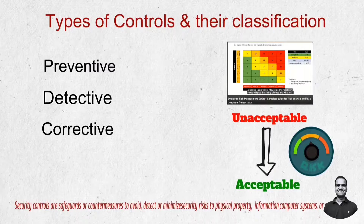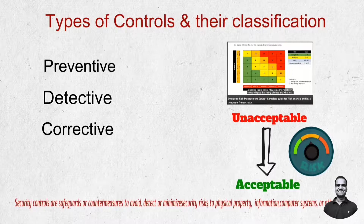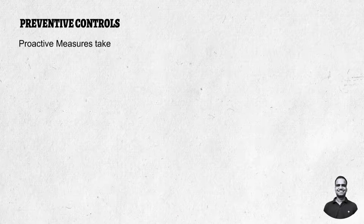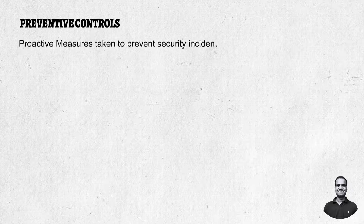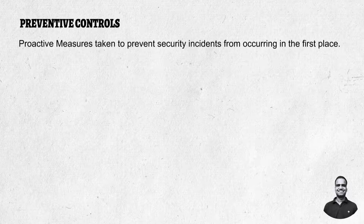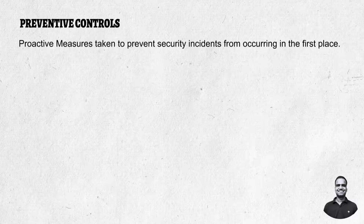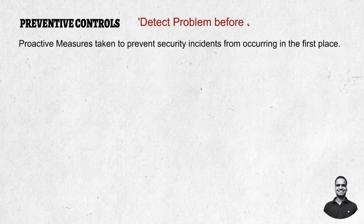Let's define what preventive, detective, and corrective controls are. Preventive controls are measures taken to prevent security incidents from occurring in the first place. They are proactive in nature and are implemented to reduce the likelihood of a security breach. Preventive control means detecting problems before they arise.